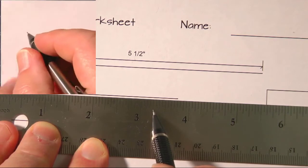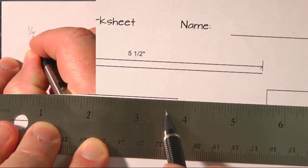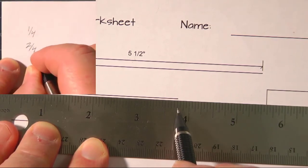And it's one quarter, two quarters, which is also half an inch, three quarters.